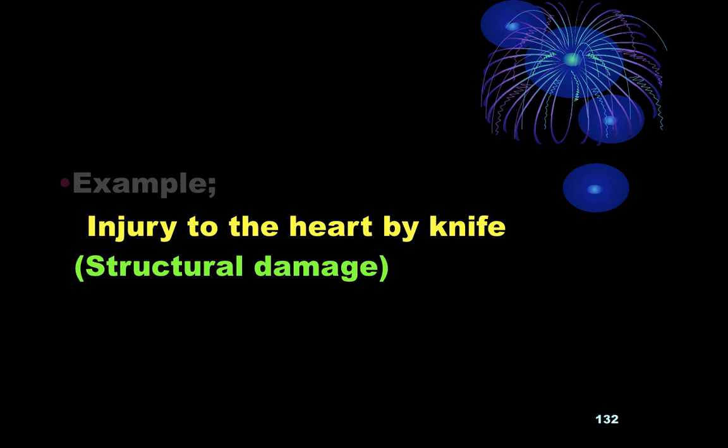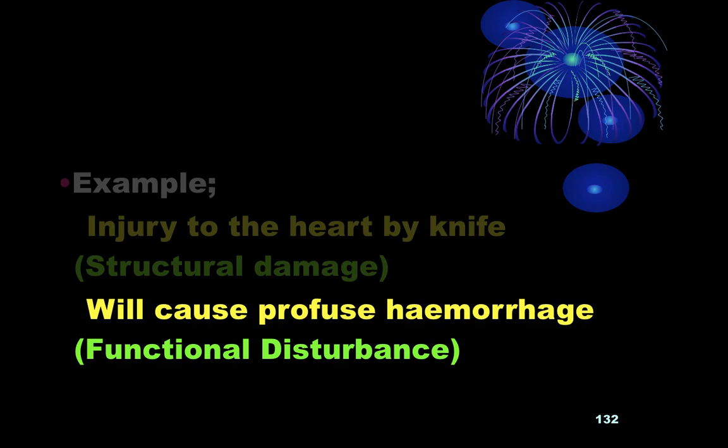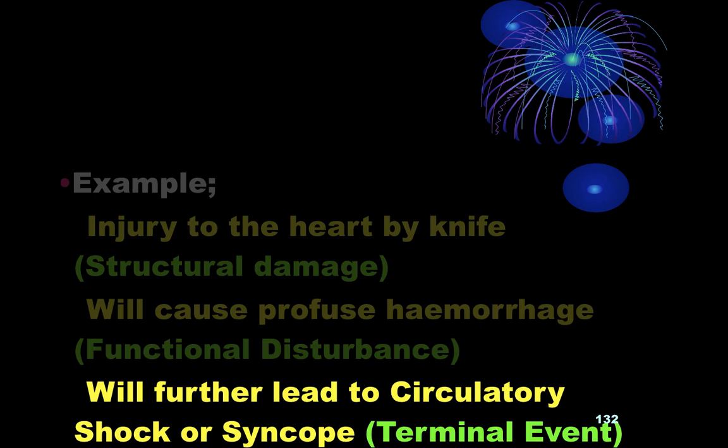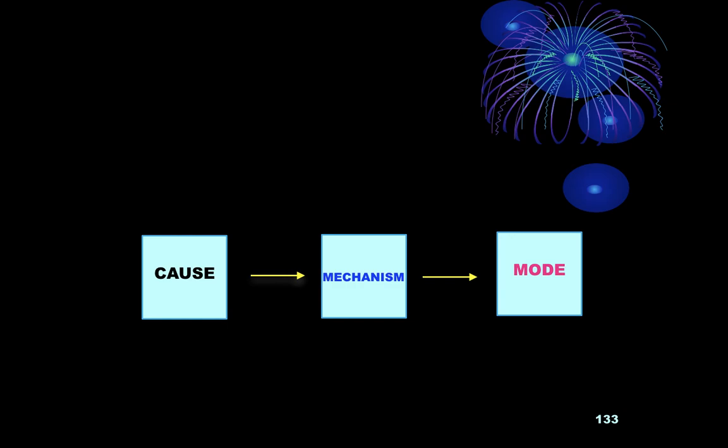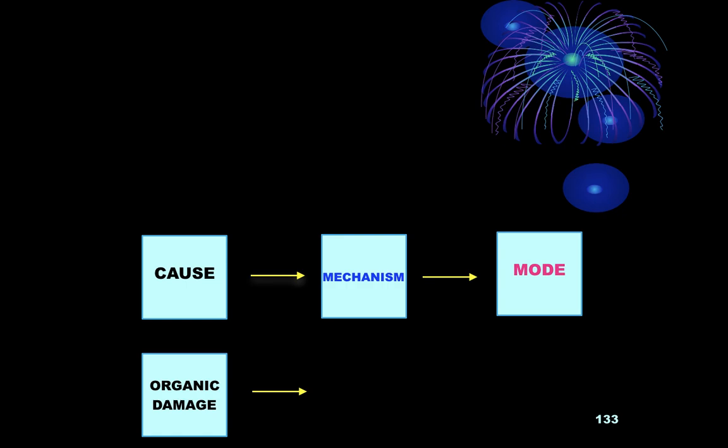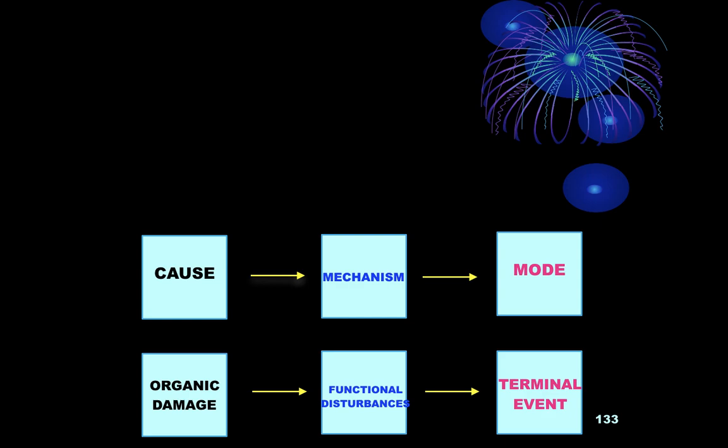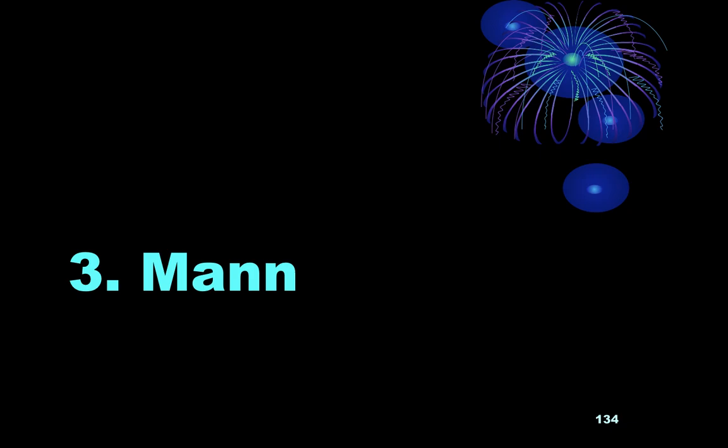For example, injury to the heart by a knife is the structural damage, which causes profuse hemorrhage as the functional disturbance, and leads to circulatory shock or syncope as the terminal event. So cause leads to mechanism, and mechanism leads to mode — organic damage leading to functional disturbance leading to terminal event, which is the mode. This is the medical cause of death.